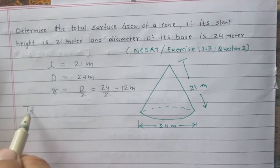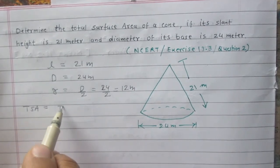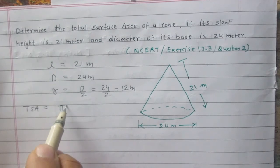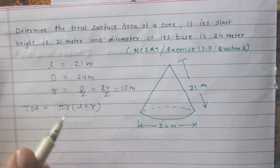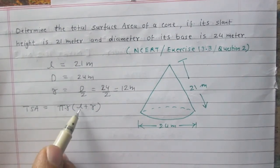Total surface area of the cone is Pi R (L plus R), where R is for radius and L is for slant height.